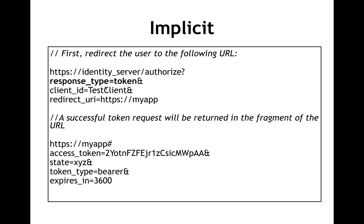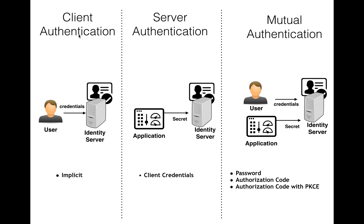Looking at the request/response pattern, you have a client ID in the request, and in response you get the access token directly once you are authenticated. To compare all approaches: with implicit, only the client (user) is being authenticated and the application is not. With client credentials, only the application is being authenticated. With password, authorization code, or authorization code with PKCE, it's mutual authentication — both the user and the application are authenticated. So with implicit, you should be really careful because the application is not properly authenticated.